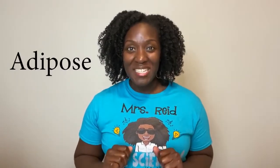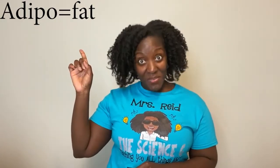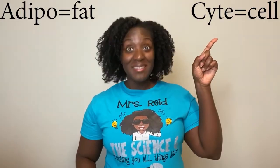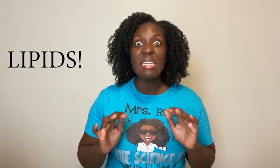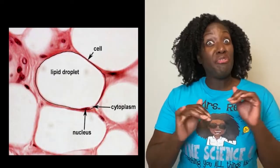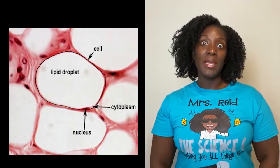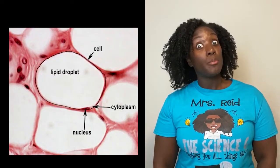The last connective tissue on our list is adipose — the fat. Adipose has adipocytes: adipo means fat, cyte means cell. Adipocytes are filled with lipids, which we learned in biochemistry is fat. Notice that the adipocyte is so filled with fat that it even moves the nucleus out of the way.